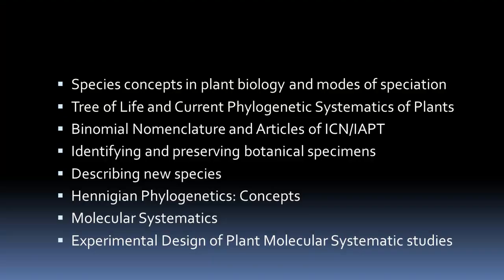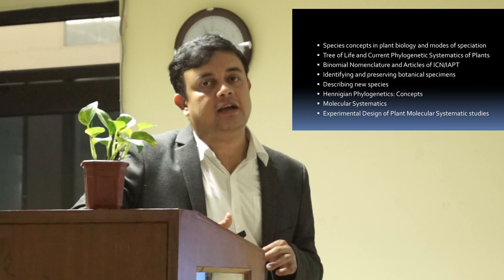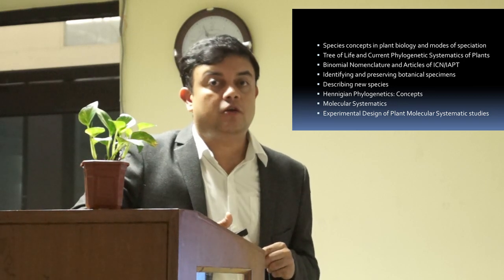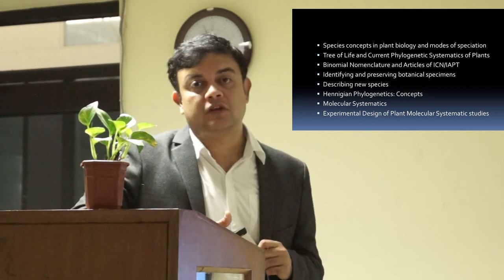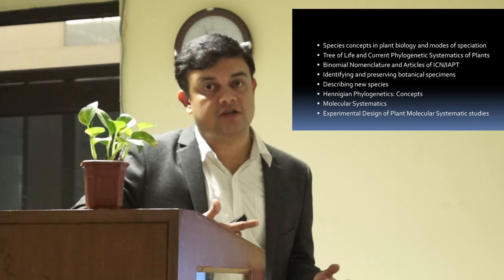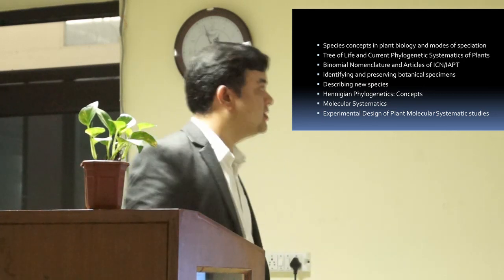Then we will come to the Tree of Life and phylogenetic systematics of plants. We will present the whole Tree of Life including animals, plants, protozoans, fungi, and bacteria — the whole picture. Then we will slowly zoom into the section for plants — algae and plants. I will explain binomial nomenclature in length as well as articles of ICN or IAPT, which are the current standard on plant taxonomy — the Melbourne Code, the International Code of Nomenclature. With some case studies, we will explain different articles, how to interpret them, and what are common problems while interpreting these articles.